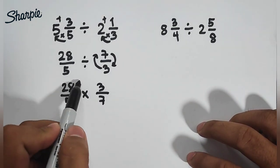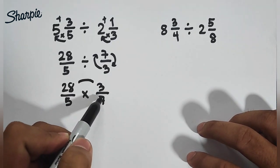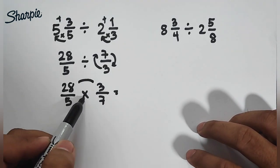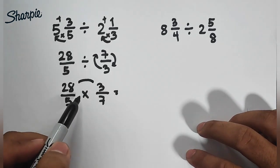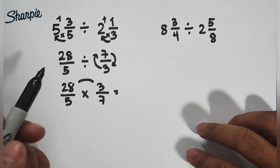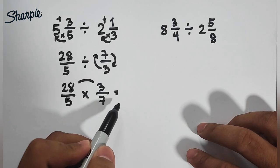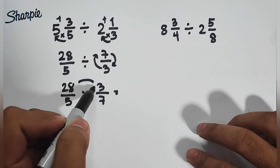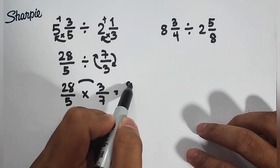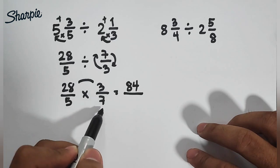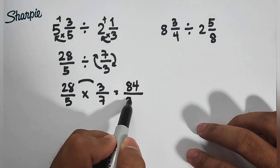And then we will multiply it. So we have now 28 times 3. That would give us the answer of 84. 20 times 3 is 60, and then 8 times 3 is 24. So we have 84 over 5 times 7, that is 35.